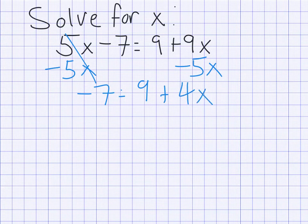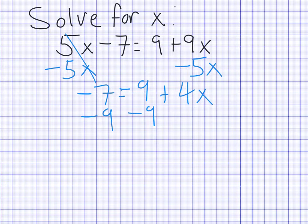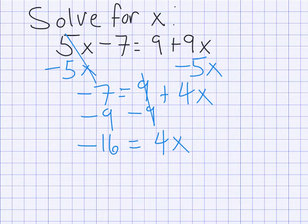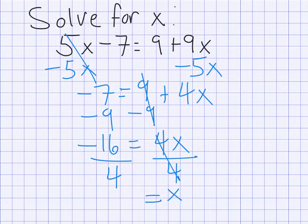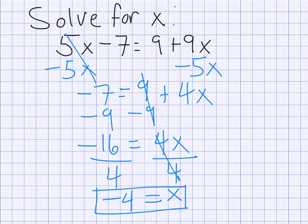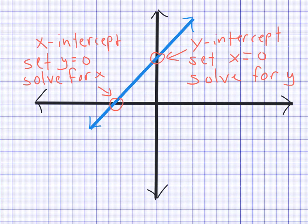That gives us negative 7 equals 9 plus 4x, since 9x minus 5x is 4x. Now all our x's are on one side. We subtract 9 from both sides — the 9s cancel out and negative 7 minus 9 gives us negative 16, so negative 16 equals 4x. Lastly, to get x by itself we divide both sides by 4, the 4s cancel, and negative 16 over 4 gives us negative 4. So x equals negative 4.